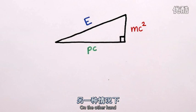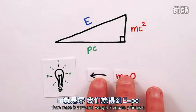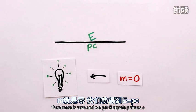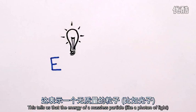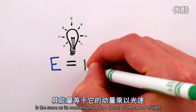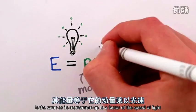On the other hand, if the particle in question is massless, like light, then mass is zero and we get E equals pc. This tells us that the energy of a massless particle, like a photon of light, is the same as its momentum, up to a factor of the speed of light.